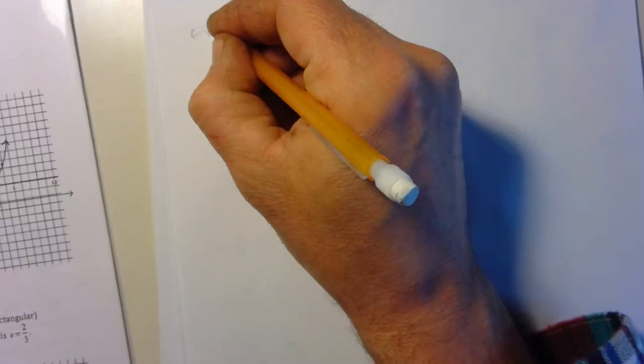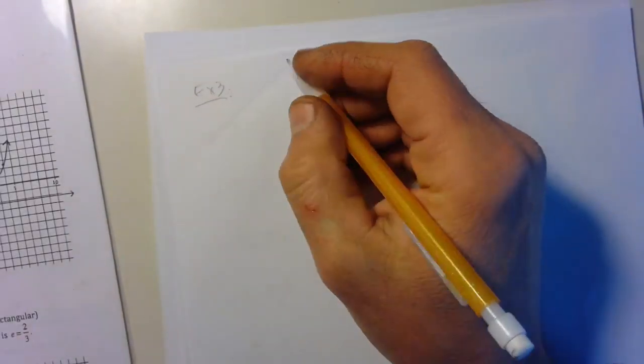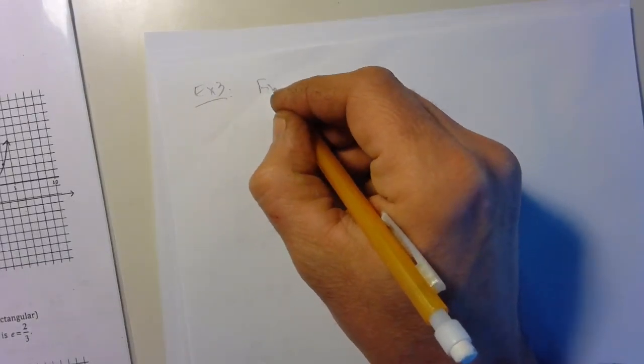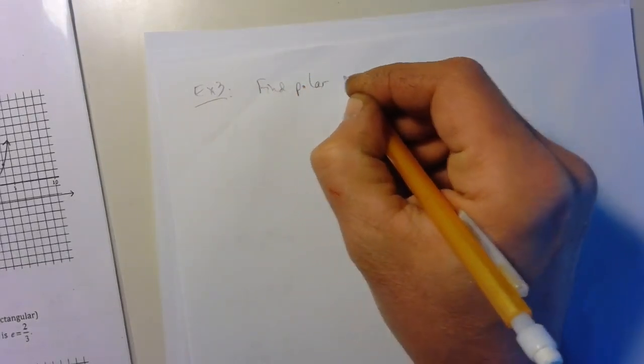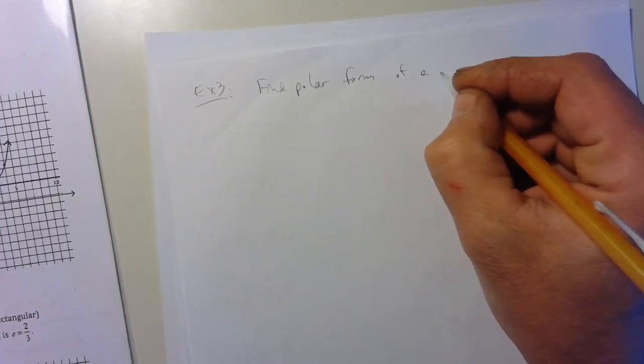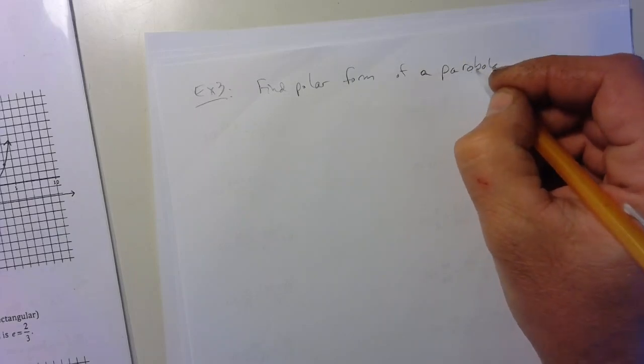Now for some videos, examples of what to do if you want to write the equation. So let's say that we want to find the polar form. Let's say it's of a parabola.